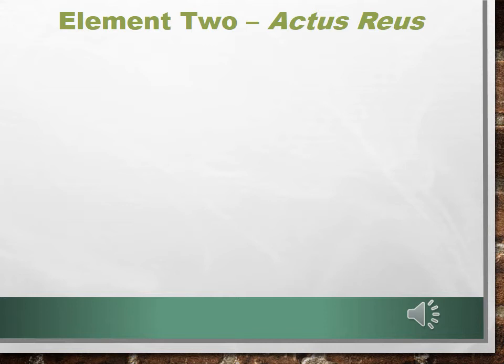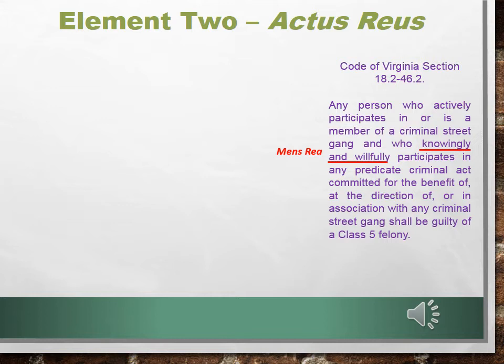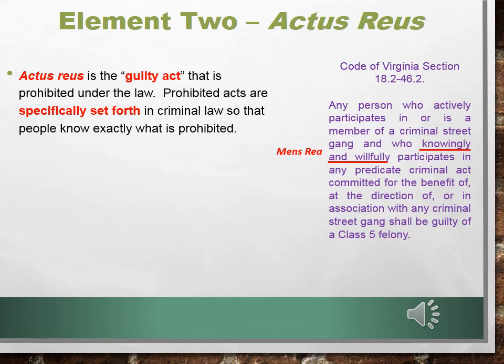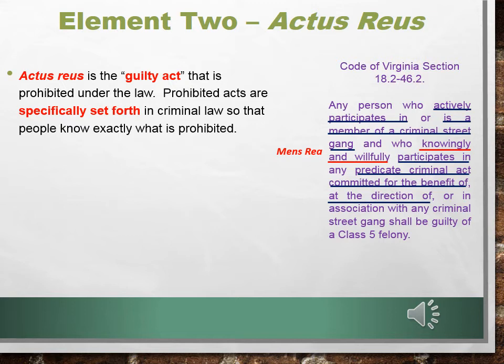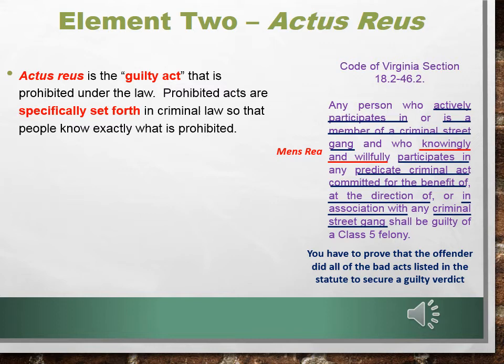Now that we know what a person must be thinking when they violate a law, it's time to see what they actually have to be doing. That's element two: actus reus. We know from our Code of Virginia section that a person must knowingly and willfully do something — that's the mens rea — to violate this general intent statute. Actus reus is the guilty act that is prohibited under the law. Prohibited acts are specifically set forth in criminal law so that people know exactly what is prohibited. In our statute, a person must actively participate in or be a member of a criminal street gang, and then participate in a predicate criminal act committed for the benefit of, at the direction of, or in association with any criminal street gang. You have to prove the offender did all of those bad acts to secure a guilty verdict.